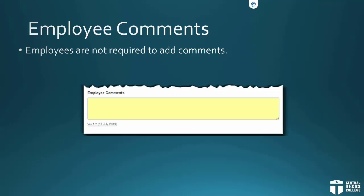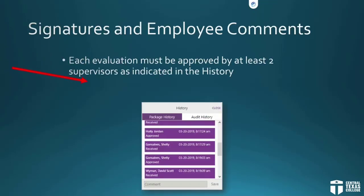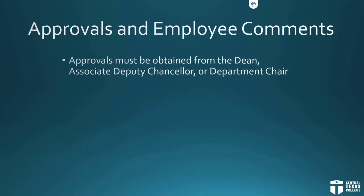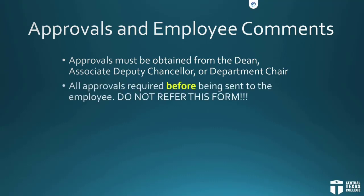Understand that employees are not required to add comments to the evaluation once they receive it. Each evaluation must be approved by at least two supervisors, as indicated in the form's history. Approvals must be obtained from the Dean, Associate Deputy Chancellor, or Department Chair — all approvals are required before being sent to the employee. Do not refer this form; there's no need for anybody in the approval chain to refer it to anybody. We'll look at the workflow here in just a little bit.